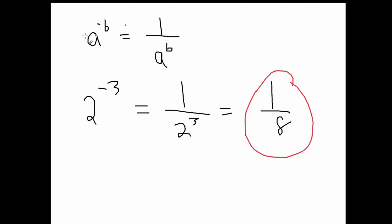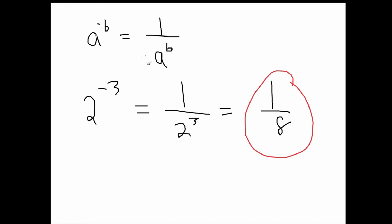But how do we know this is true? This seems kind of arbitrary, right? So let's say we have a to the negative b, and we know that equals 1 over a to the b. How can we prove this?